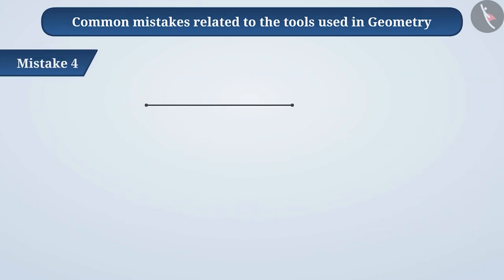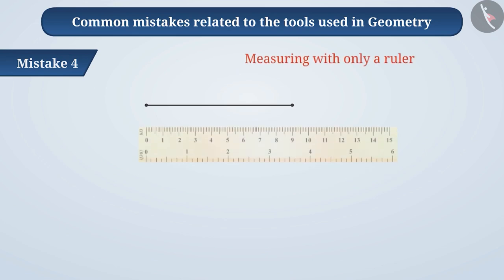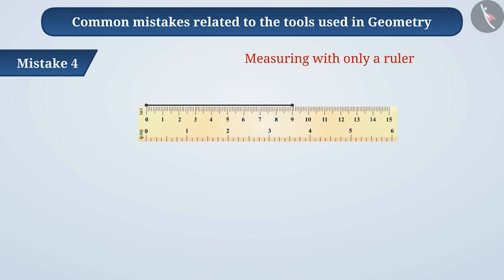Mistake 4: Students often try to find the measurement of a line segment by using a ruler without using a divider. But this is wrong because when the eye is not placed just above the symbol, it results in wrong measurement.